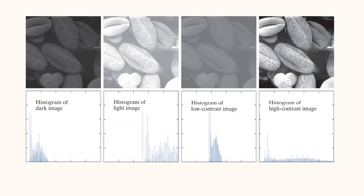For the high contrast image, that is the last image given here in this example, the histogram is distributed across 0 to L-1. From this, we can conclude that a high contrast image will have a flattened histogram which is uniformly distributed across intensity levels ranging from 0 to L-1. Hence, to get a high contrast image, we can use histogram equalization so that the intensity values are distributed across 0 to L-1.